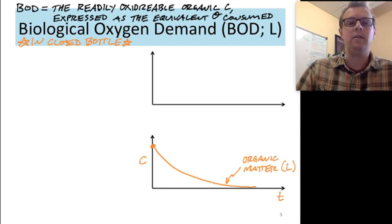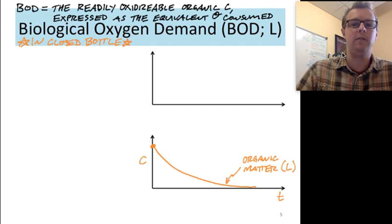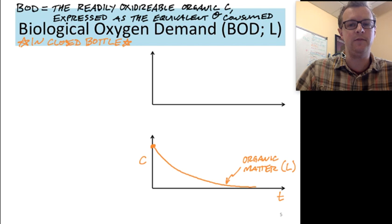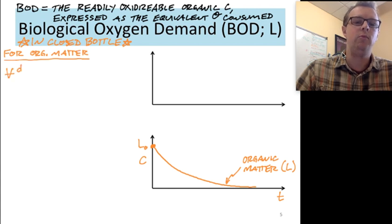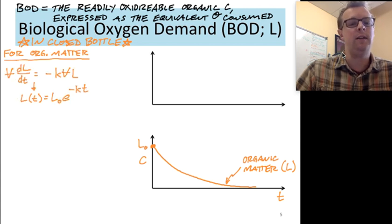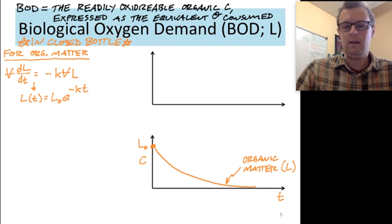And so if we took this closed bottle of water, it started with some amount of oxygen and some amount of organic matter in it, and we just watch what happens through time, we'd see organic matter go through this exponential decay as I've shown in orange, and we would have had some initial concentration L0. And so we've seen this before and we should be pretty comfortable with the idea that for something where it's just a first order reaction as the removal process, we can get this exact solution of exponential decay.